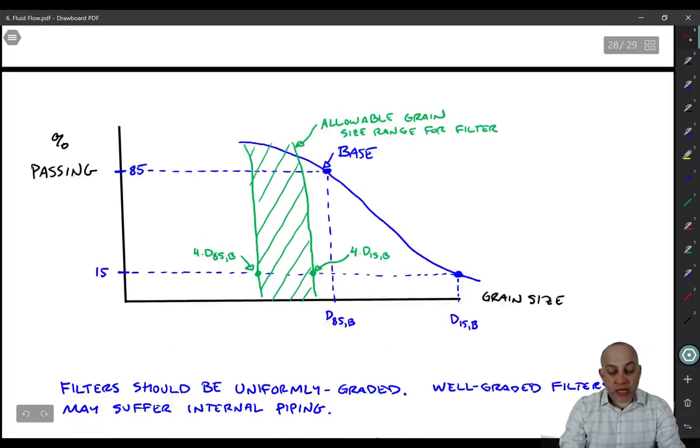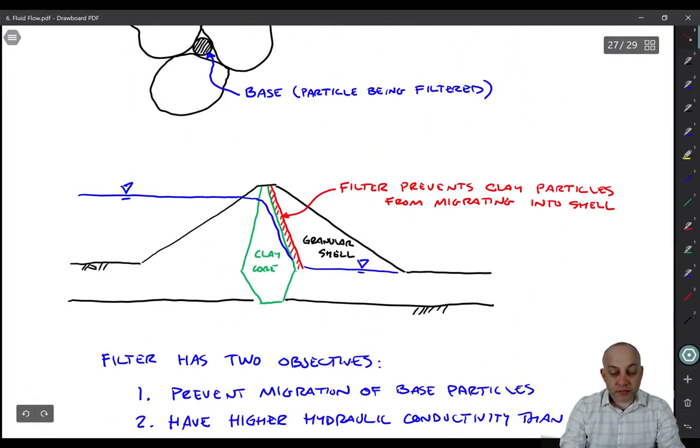Now let's go back to this earth dam example. Basically, we're transitioning from a clay core to a granular shell. And we can design a filter that will filter the clay core material and place it right there next to the core and it will be all fine. But then we have to answer the question, will that filter itself go into the granular shell? So in a way now the granular shell is acting as the filter and the filter is acting as the base.